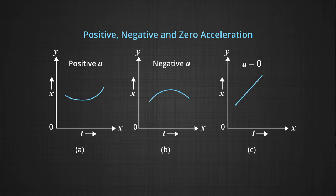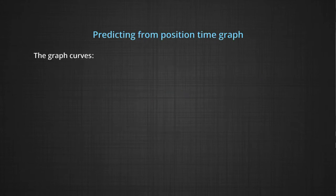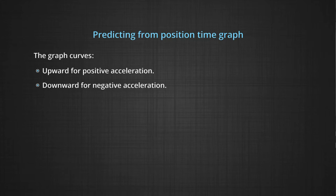In graph C, the straight line suggests that the velocity is constant. And if velocity is constant, we are talking about zero acceleration. We can see that we can predict from position time graph the upward curve for positive acceleration, downward for negative acceleration and a straight line for zero acceleration.